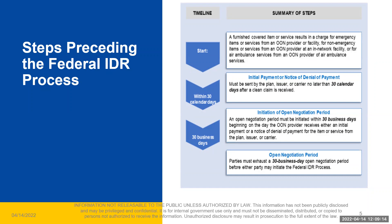The plan must include with its initial payment or denial of payment the appropriate person or office to contact if the provider, facility, or provider of air ambulance services wishes to initiate open negotiations. They must also include a statement that if the open negotiation period does not result in an agreement on the out-of-network rate, either party is able to initiate the federal IDR process. The applicable qualified payment amount (QPA) for each item or service must also be included by the plan.